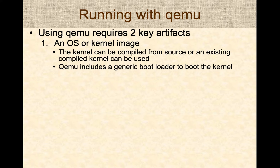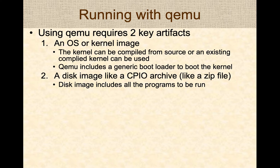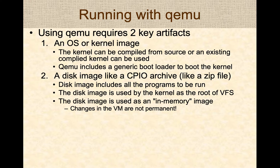QEMU includes a generic BIOS and a bootloader, so it can directly boot the kernel. The second thing required — which the kernel requires — is a disk image, also called an archive. It's like a zip file containing all of the files you want the kernel to work with. The disk image is an in-memory image, meaning changes are not permanent; once you turn off the virtual machine, they will be lost.